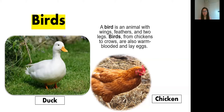So the first example of a vertebrate is birds. Please repeat after me: birds. So what are birds? A bird is an animal with wings, feathers, and two legs. Chickens and ducks are also warm-blooded and lay eggs. Again, a bird is an animal with wings and two legs.